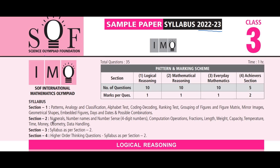Section three has the same syllabus as section two but it focuses on everyday mathematics — how you use math in your day-to-day life. Section four is the achievers section with higher order thinking questions — five questions worth two marks each, covering the same chapters as section two. Now let's start with the logical reasoning skill questions.